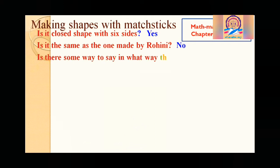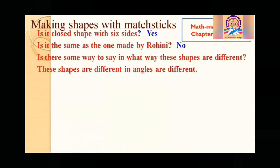Okay, so is there any some way to say that, say in what way these shapes are different? These are different. But can you say any way specific way how these shapes are different? Yes, we can say. Okay, these shapes are different in angles.